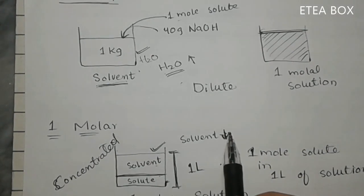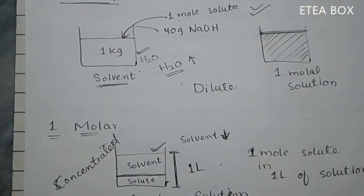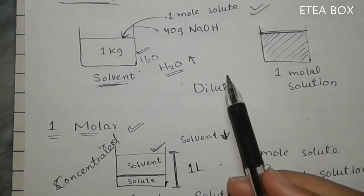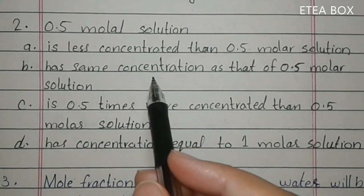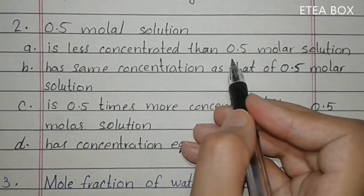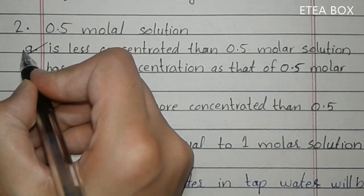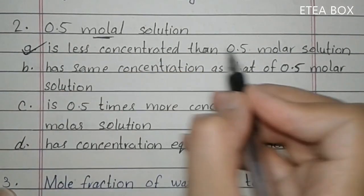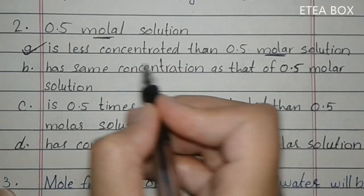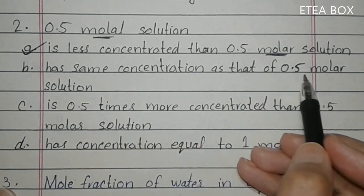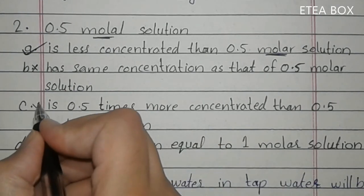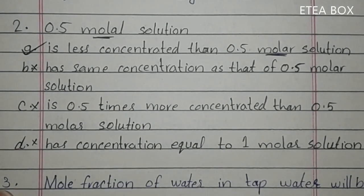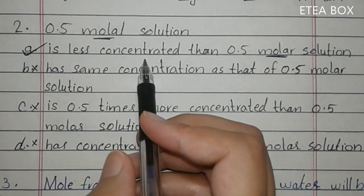Keep one thing in your mind: molal solution is always dilute compared to molar solution. Back to the MCQ — '0.5 molal solution is less concentrated than 0.5 molar solution.' This one is correct. The molal solution is always dilute compared to the molar solution. So here option A is correct. Remember: molal is dilute and molar is concentrated.